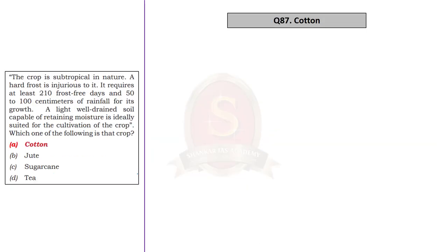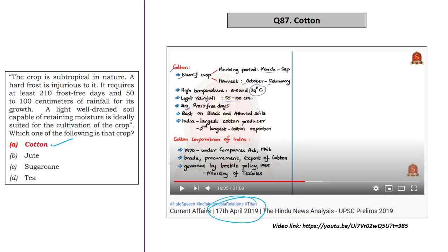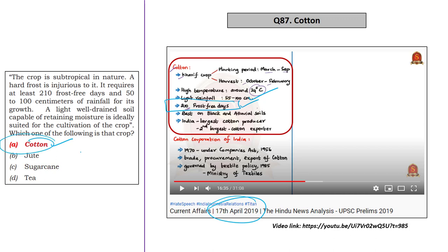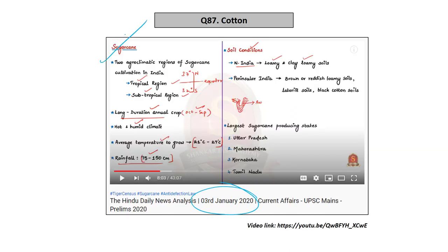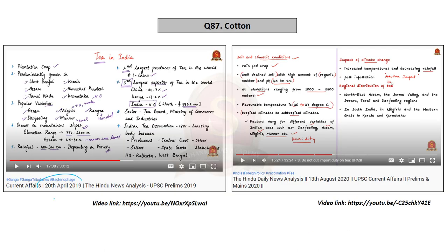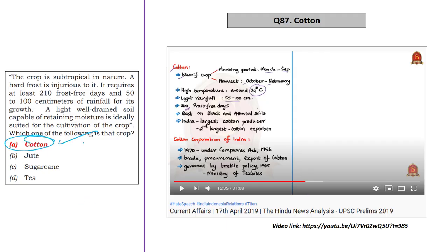The 87th question in Set A is a description-based question about cotton crop. We mainly discussed cotton crop on 17th April 2019 in the Hindu News Analysis, mentioning that cotton requires light rainfall around 55 cm to 100 cm and specifically 210 frost-free days for its cultivation. With this information, you can easily arrive at the correct answer, which is Option A — cotton. We also discussed the other crops mentioned in the question: sugarcane on 3rd January 2020, and tea on 20th April 2019 and 13th August 2020. Those discussions clearly differ from that of cotton, which is why cotton is the correct answer.